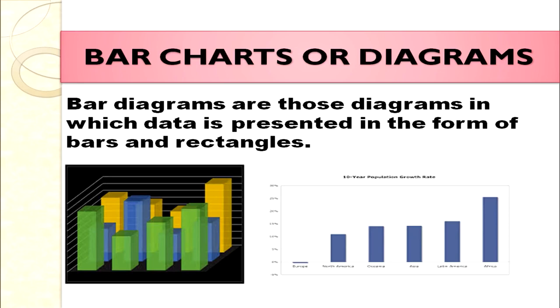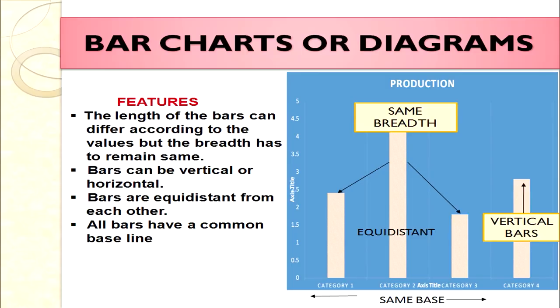Now we move on to bar charts or diagrams. Bar diagrams are those diagrams which present the data in the form of bars or rectangles. Bar diagrams may be drawn horizontally or vertically. Before we discuss different types of bar diagrams, we must know the key features of bars so that we can correctly construct the different types of bar charts.